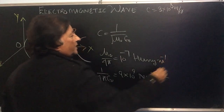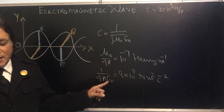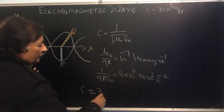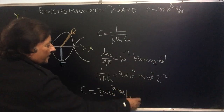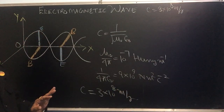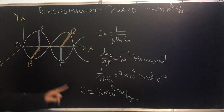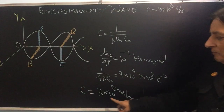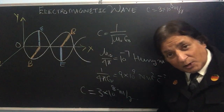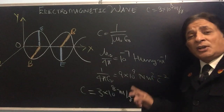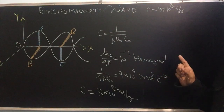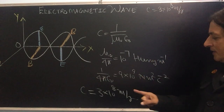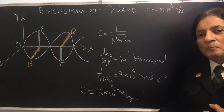If we place the values of μ₀ and ε₀ into the formula, the value of c comes out to be 3 × 10⁸ meter per second. This is the value which is the same as the velocity of light — this is the speed of the electromagnetic wave. From this we conclude that light is an electromagnetic wave and its speed is 3 × 10⁸ meter per second.